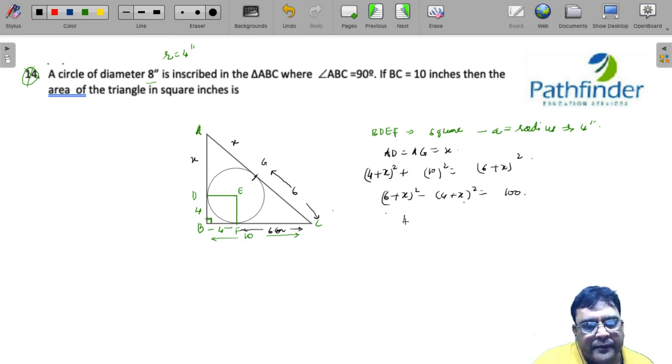You will get (10 plus 2X) into 2 is equal to 100, which means 10 plus 2X is equal to 50 or X is equal to 20 inches.